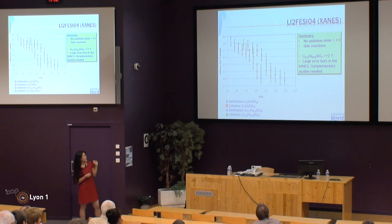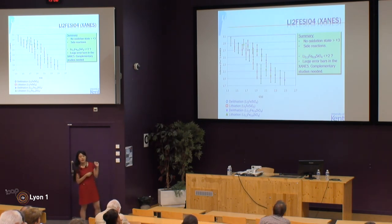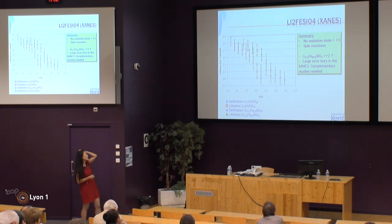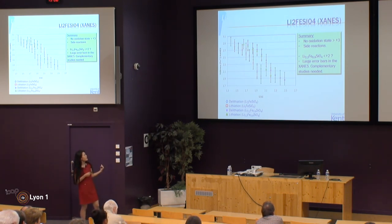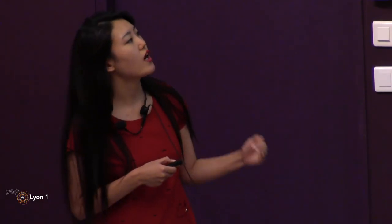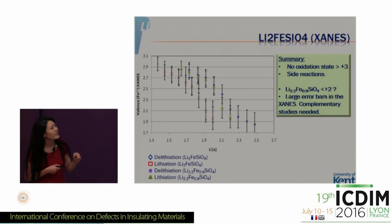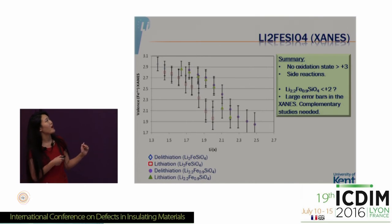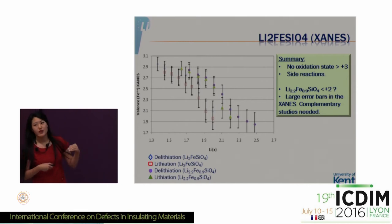This table shows the iron oxidation state balance obtained from EXAFS and the calculated number of lithium atoms in the structure. As you can see, they show reversible behaviour: as you decrease the number of lithium ions from the cathode, the oxidation number increases to Fe3+, and then returns to Fe2+ when lithium is reinserted into the structure.